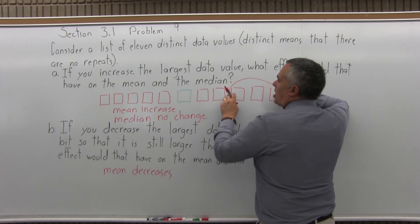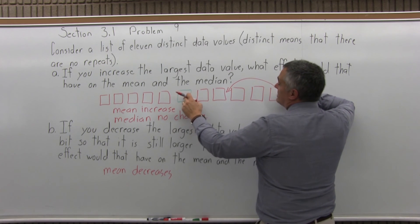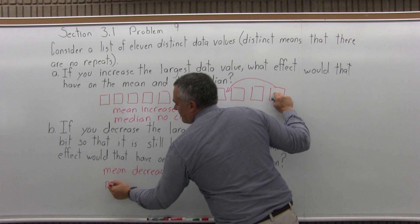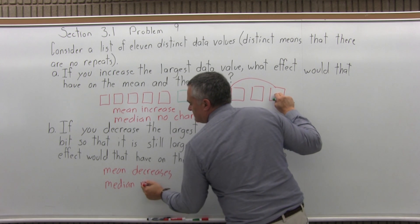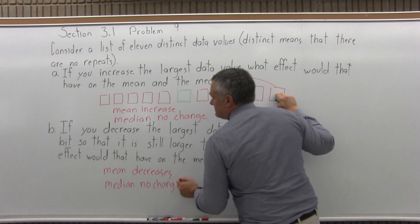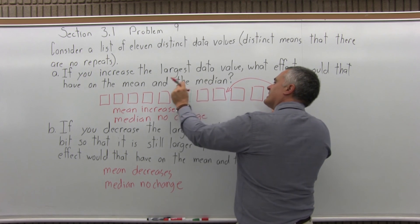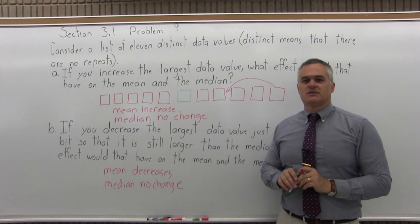But as long as you don't make it too small, as long as you don't make it so small that it gets smaller than the median, the middle of the list stays in the same spot. In this case, the median would have no change. As long as you don't make that decrease so small that it gets in front of the median, the middle of the list is still the middle of the list.